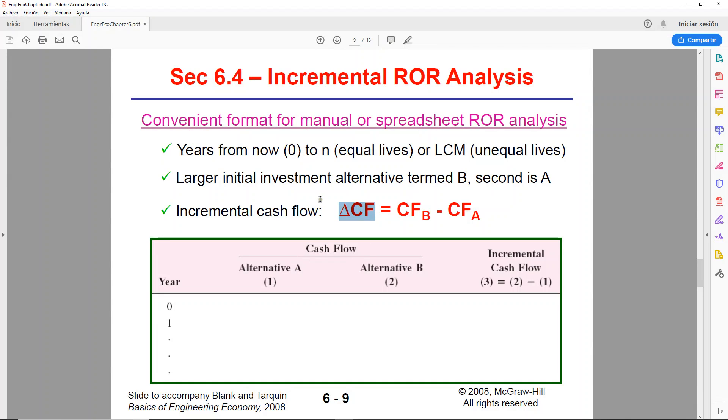Remember that we mentioned that you will be comparing only two alternatives at a time. Even if you have more, you're going to go in pairs. You're going to set up a table like this, with these columns, and then you're going to be listing the years in the first column.